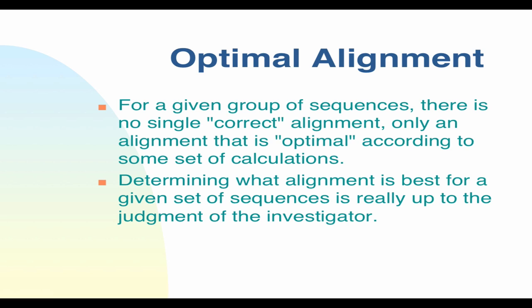A multiple alignment is more of an assertion of relationships and a visualization tool. It's the product of a particular scoring system and algorithm — not assumed to be true in any real sense. There's actually quite a lot of room for judgment from the investigator; you can go in and edit the alignment without compromising scientific validity, as long as you're not using it for phylogenetics.